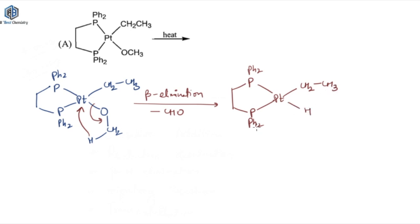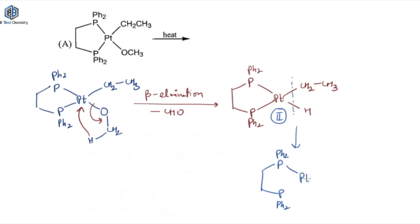In the next step it's very simple — you have reductive elimination. The oxidation state of platinum changes from +2 to 0. So you get a Pt(0) complex with PPh2 ligands, and the byproduct you get is CH3CH3 — ethane. So in option A you got ethane as the product.